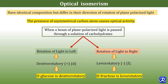Natural sugars are usually optically active, but synthetic carbohydrates are racemic — meaning they are optically inactive. A racemic mixture is one in which equal amounts of dextrorotatory and levorotatory isomers are present, resulting in no net optical activity.